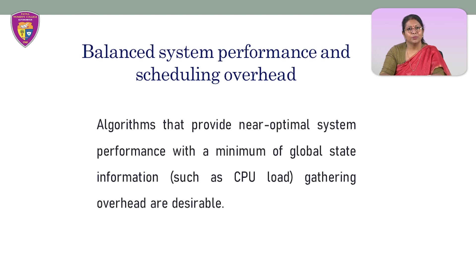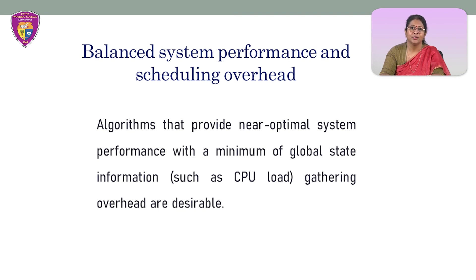Another desirable feature is to balance system performance and scheduling overhead. Algorithms that provide near-optimal system performance with a minimum of global state information — such as CPU load gathering overhead — are desirable, because the overhead increases as the amount of global state information collected increases. The usefulness of that information decreases due to both the aging of the information being gathered and the low scheduling frequency resulting from the cost of gathering and processing the extra information.